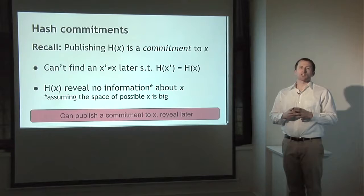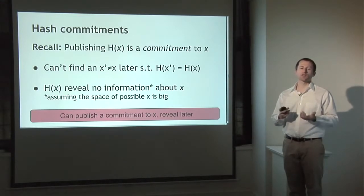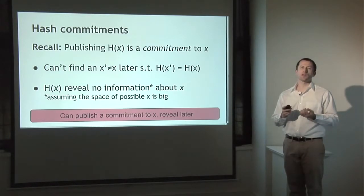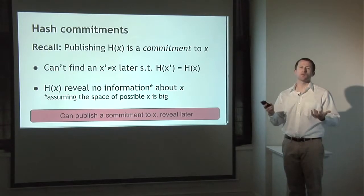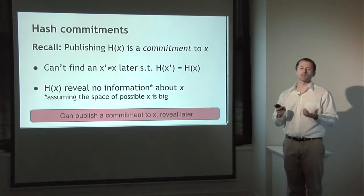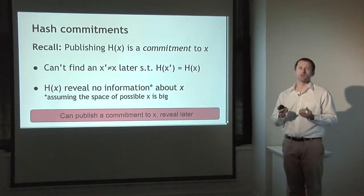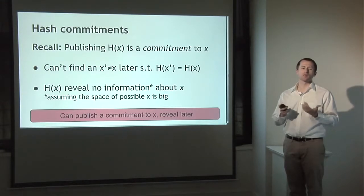We can use hash functions to commit to data. Instead of publishing the data x that we want to prove we know, we publish the hash of x. The properties of the hash function guarantee that we can't later find some other value x' that has the same hash value as x — that would be a break of the cryptographic properties of the hash function. The hash of x shouldn't reveal any information about x, with the caveat that's only true if x comes from a large possible space.